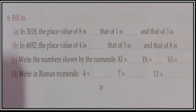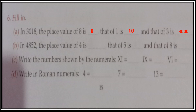Now fill in the blank children. In 3018, the place value of 8 is 8 (ones place, 8 × 1 = 8). The place value of 1 is 10. The place value of 3 is 3000. Same way, in 4852: the place value of 4 is 4000 because it is at the thousands place. The place value of 5 is 50. And the place value of 8 is 800.